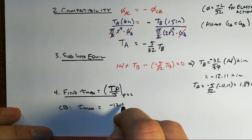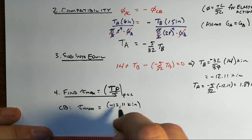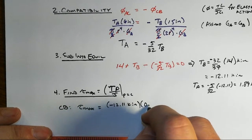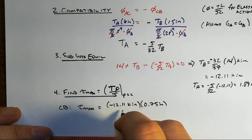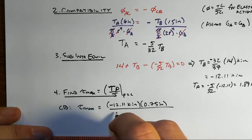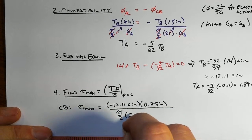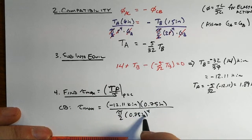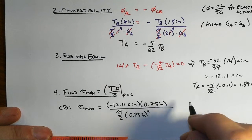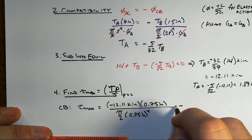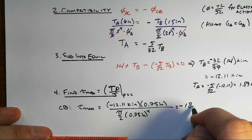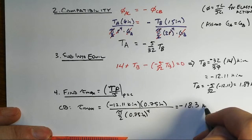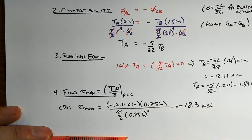So minus 12.11 kip inches times a radius, that's 0.75 inches, over our J, which is pi over 2 in the radius to the 4th power. Kip inch squared over inches to the 4th will give us kips per square inch. And that will be minus 18.27 kips per square inch.